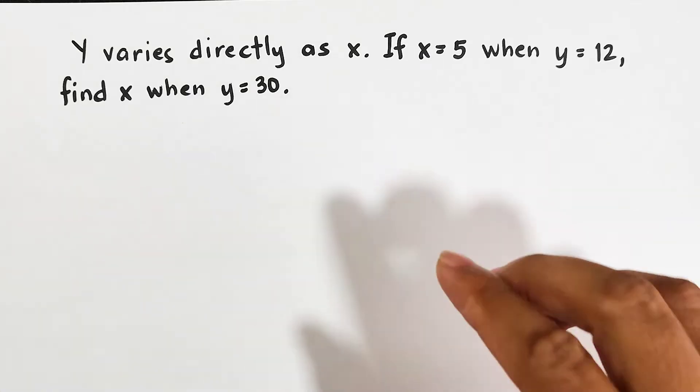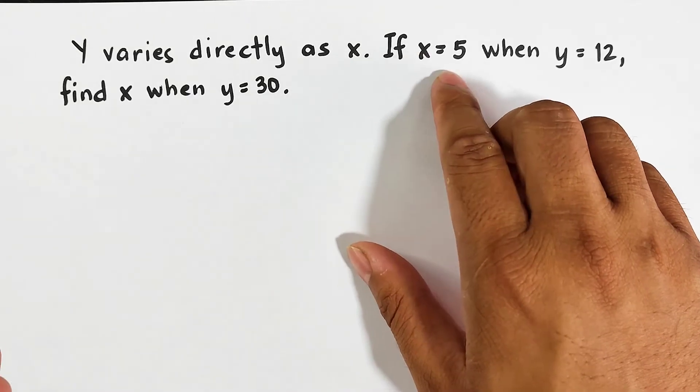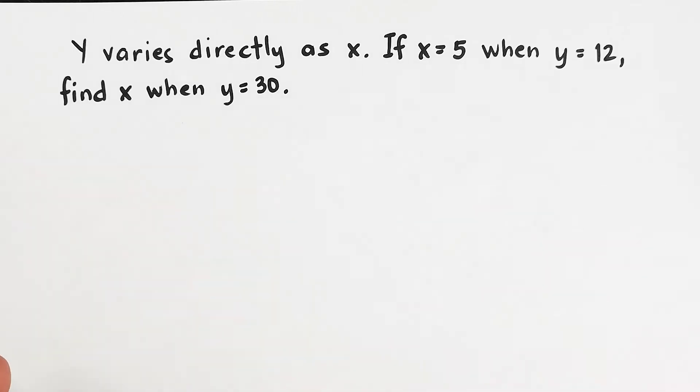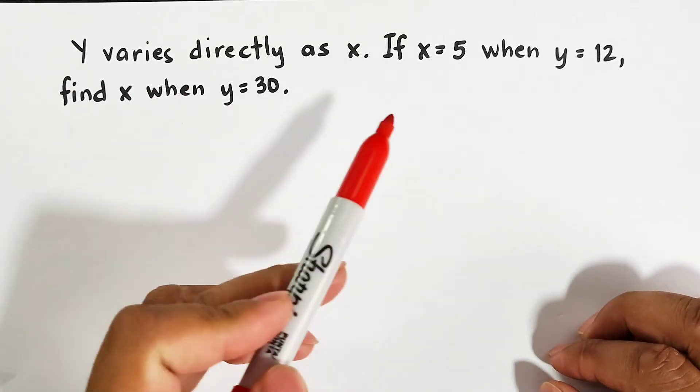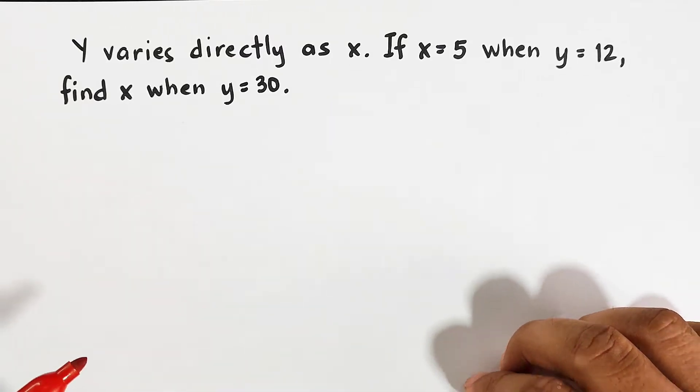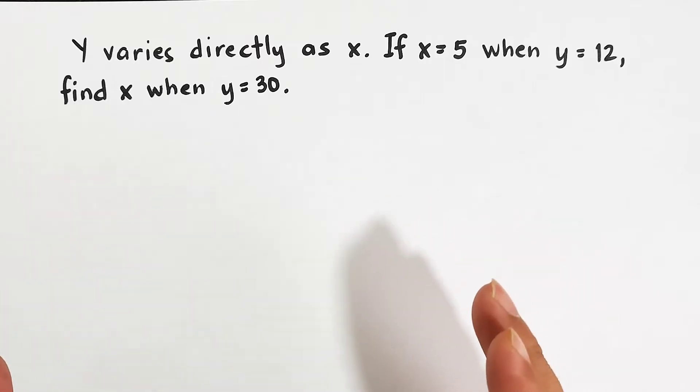And to be continued, we have if x is equal to 5 when y is equal to 12, find x when y is equal to 30. So at first glance, it may look a bit difficult. So we have what we call the chop-chop method. Again, we have the chop-chop method wherein we will divide the given problem into three parts.